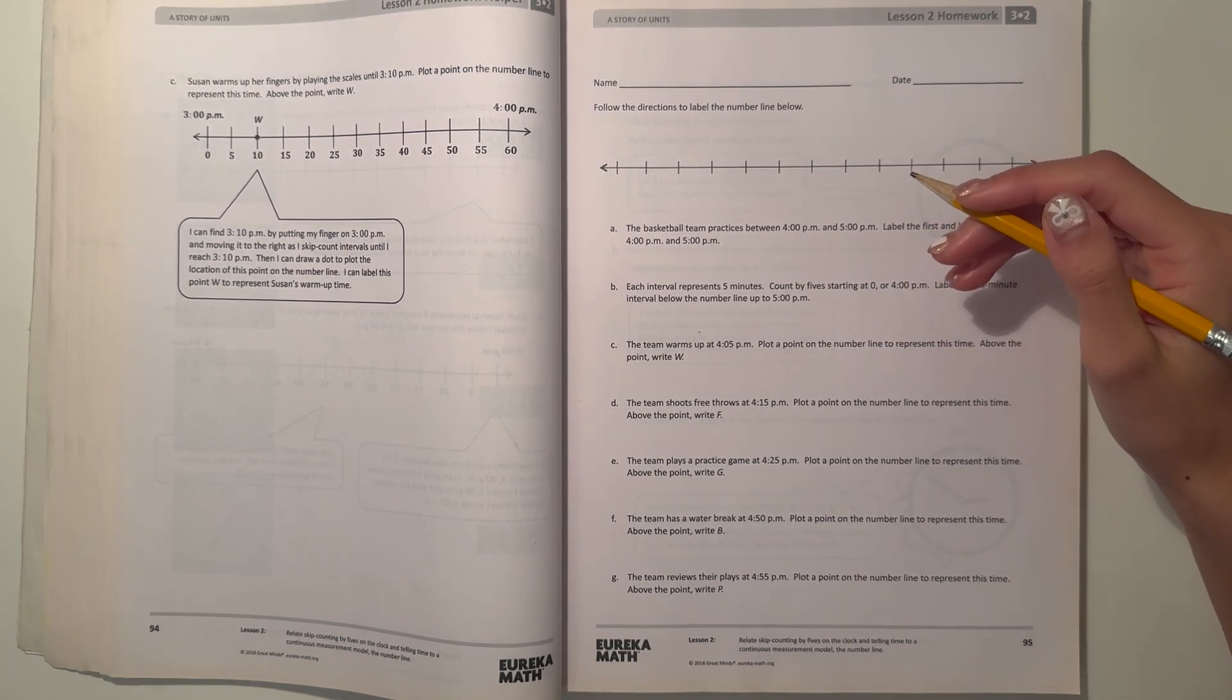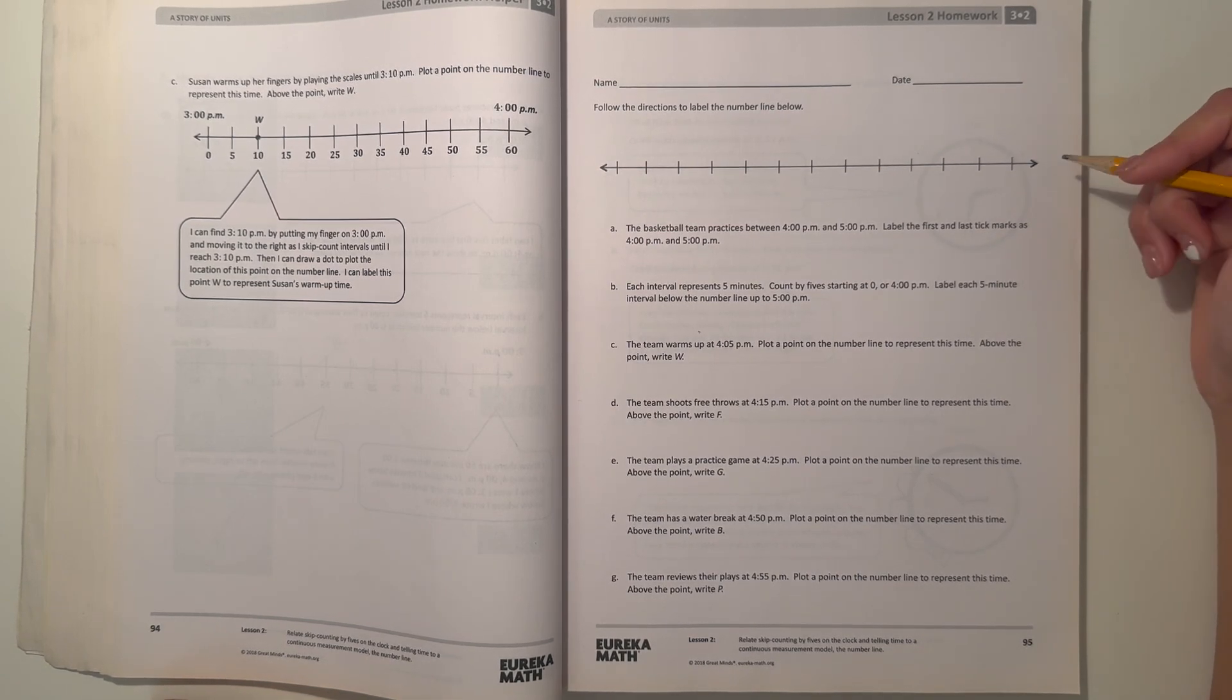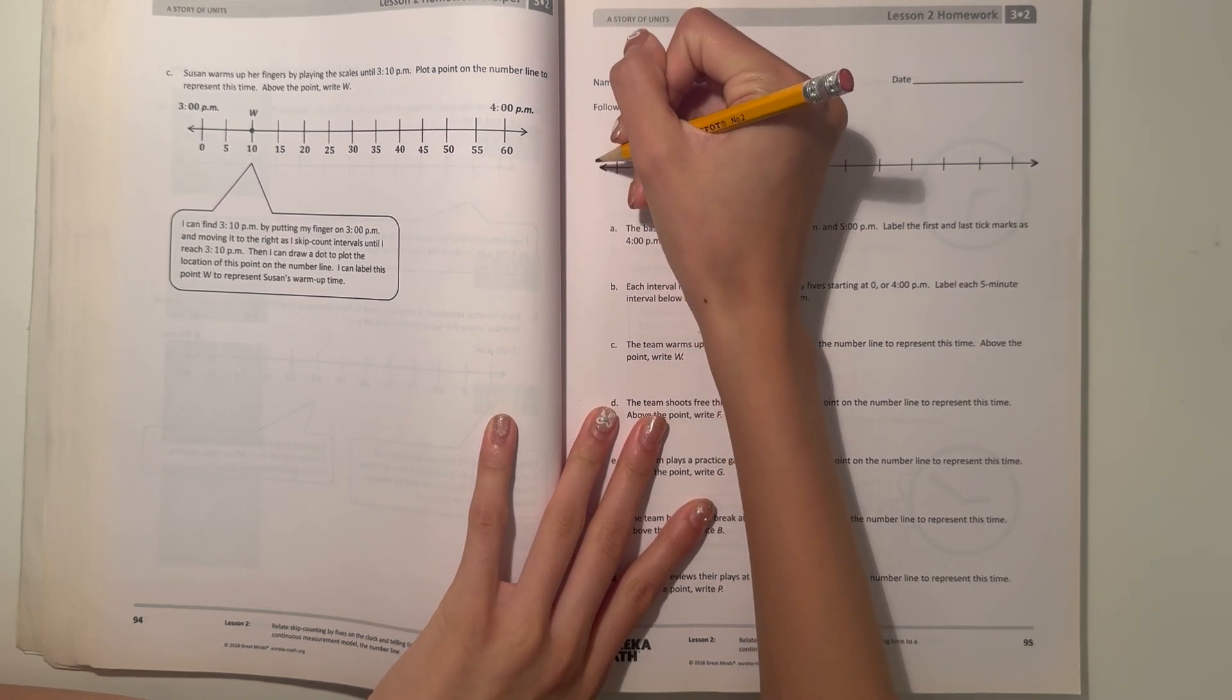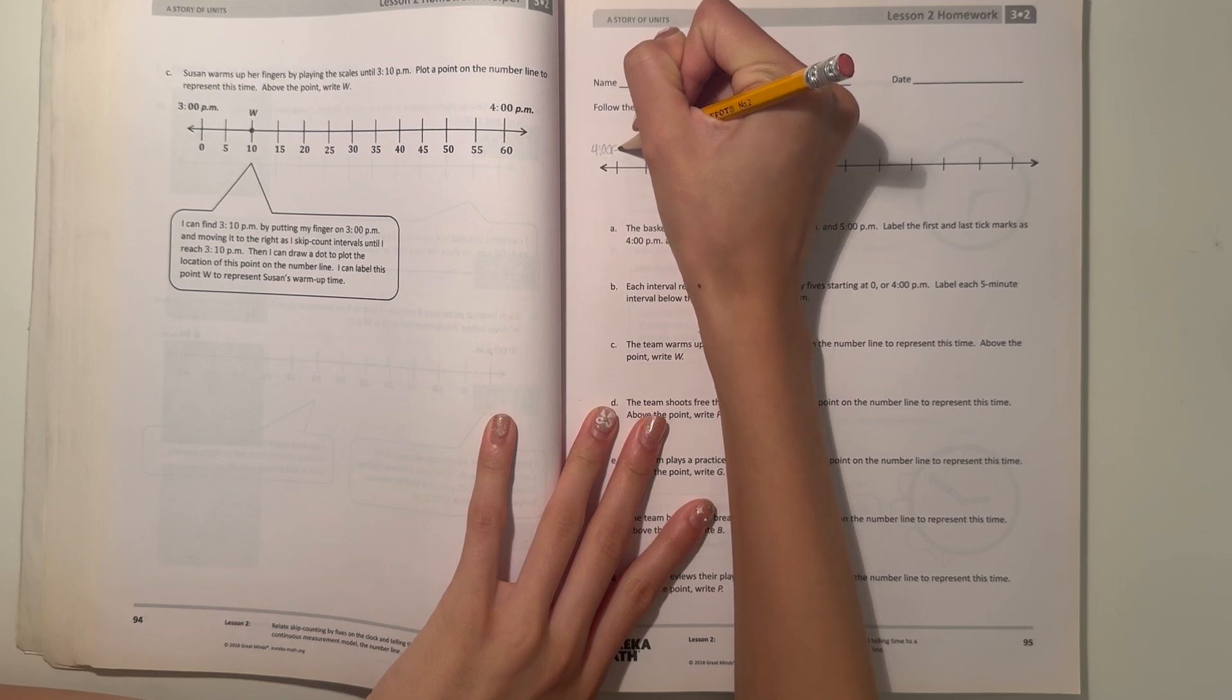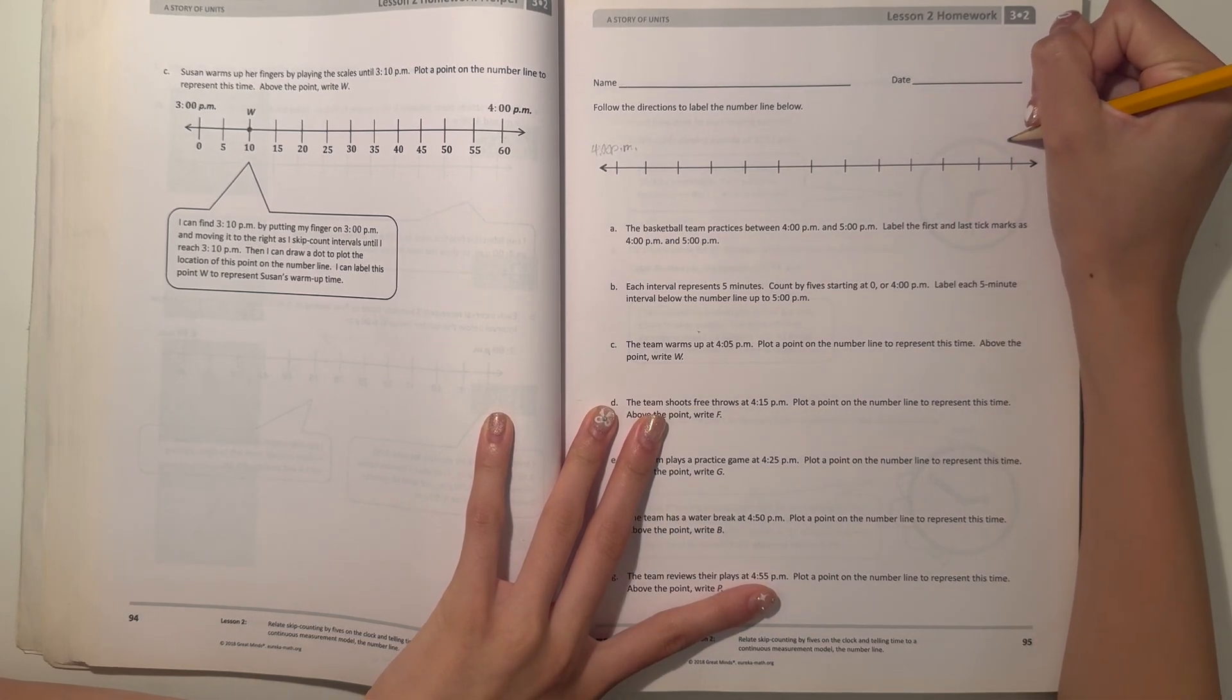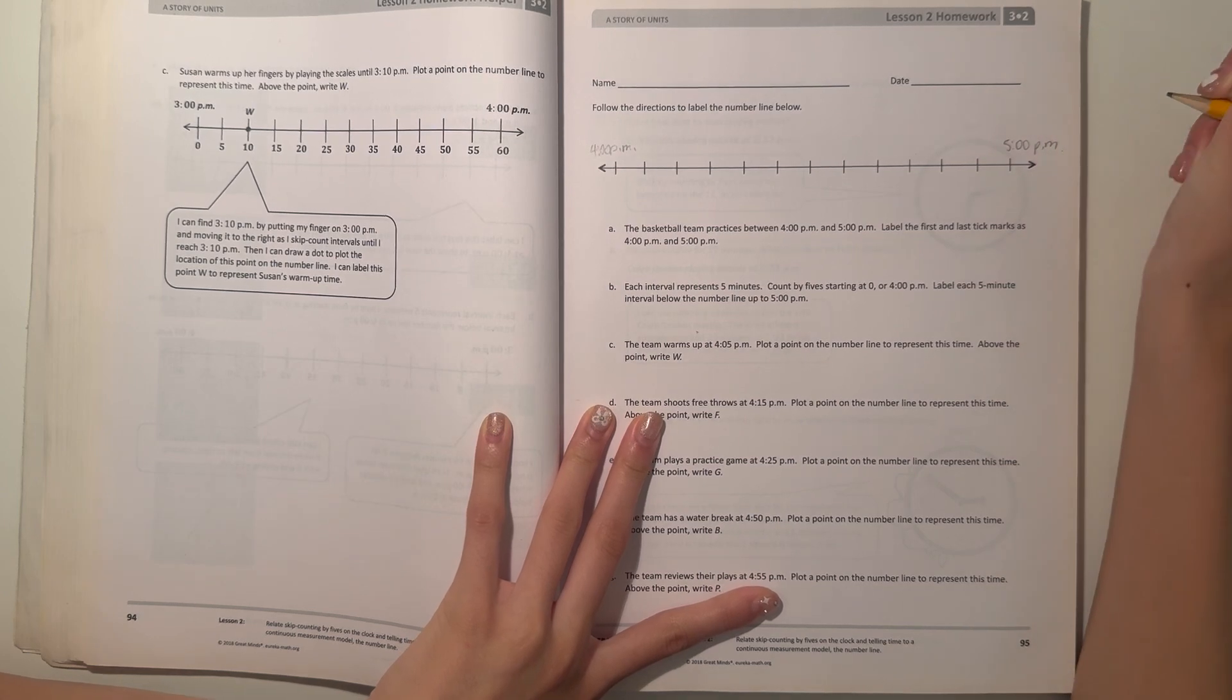Part a: The basketball team practices between 4 p.m. and 5 p.m. Label the first and last tick marks as 4 p.m. and 5 p.m. All right, so this is a number line. The first tick mark is this one - let's label it 4 p.m. And the last one is over here - that would be 5 p.m.